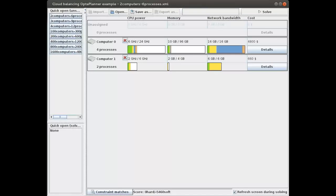Welcome to another example with OptaPlanner. In this case we will optimize the cloud. Here you can see a simple use case where we have two computers and six processes we need to assign to those two computers. The two computers are in the cloud, of course.